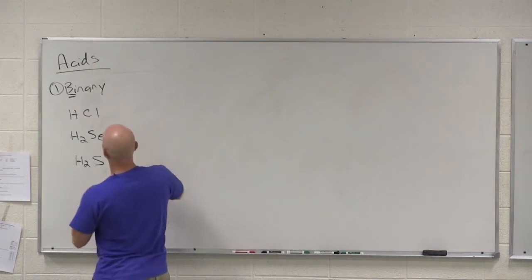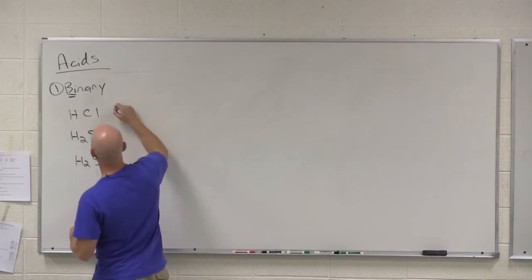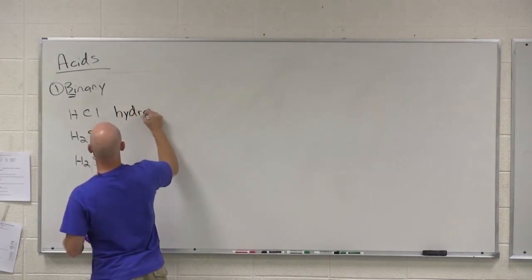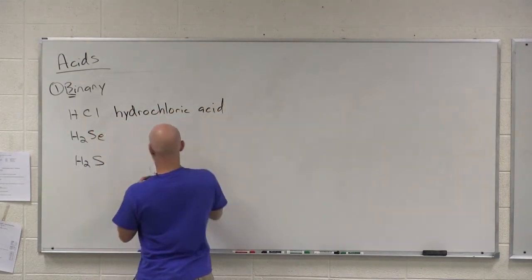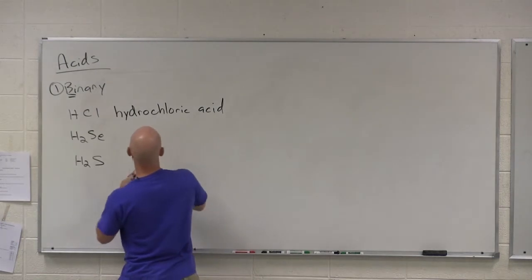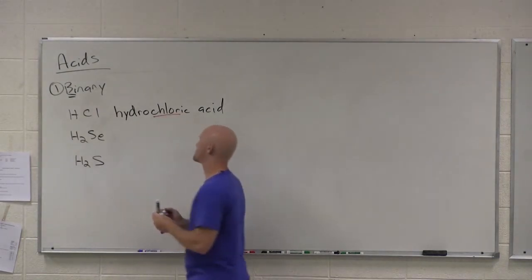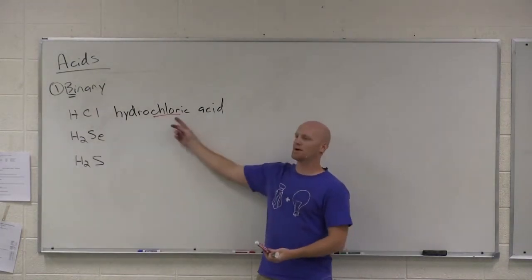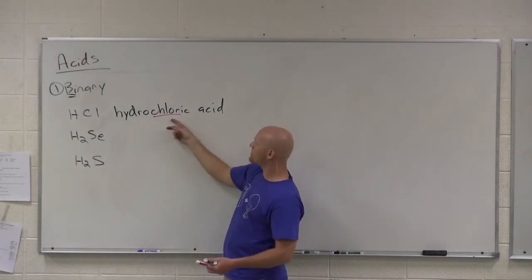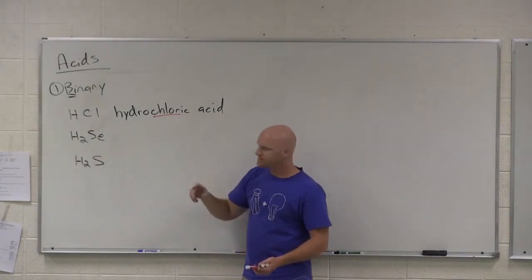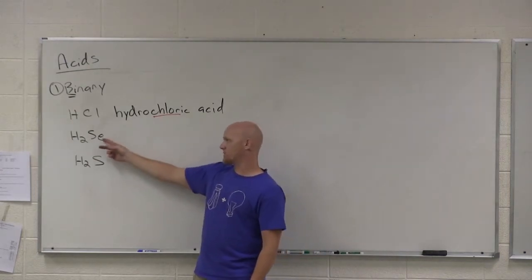So for binary acids, start with your most famous one. This is hydrochloric acid. Notice the distinguishing thing that tells me it's the chlorine binary acid is this part right here. Everything else is the same for your binary acid. It's hydro-something-ic acid. So that something just tells me what the other element is.